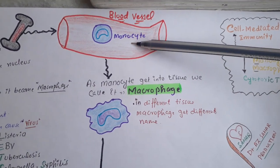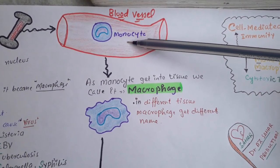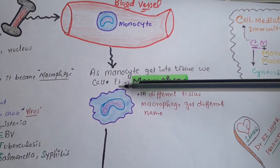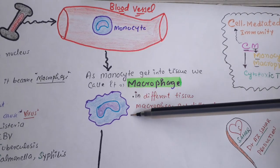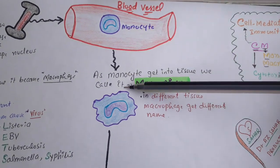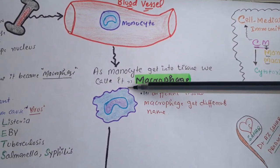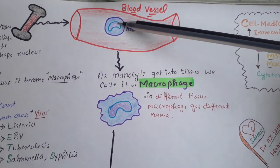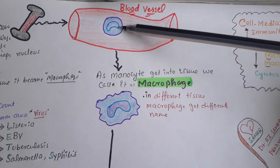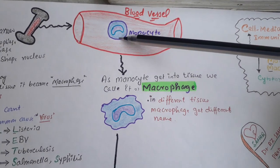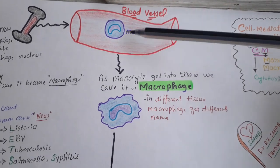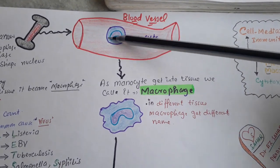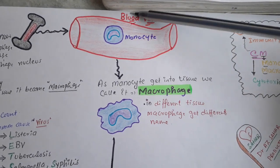The function of monocytes is phagocytosis, but monocytes cannot perform phagocytosis. For phagocytosis, we need foot formation called pseudopodia. Pseudofoot formation occurs because of the filaments or cytoskeleton inside the cell, such as actin and myosin proteins. These filaments are not fully developed in monocytes and there is not enough space inside the monocyte, so monocytes cannot do phagocytosis.